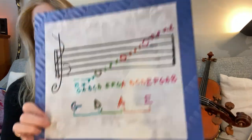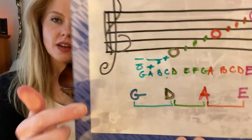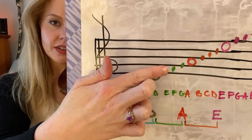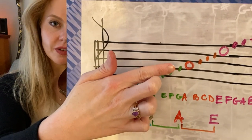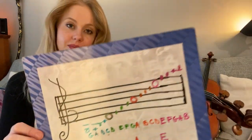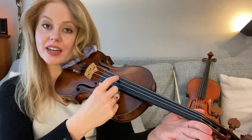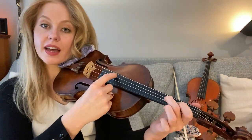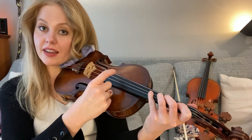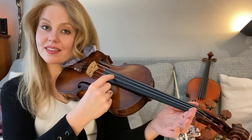Same thing — if I'm on the D string, I have my open string, first finger, second finger, third finger, fourth finger, or my next open string. So I could have D, E, F sharp, G, A — and this A is the same as my open A.